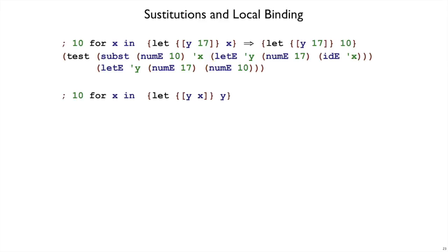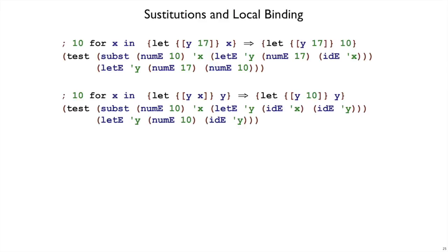Let's try another example. Let's suppose we're replacing all the x's with 10 in this let form. So now we have y be x and y. Again it seems clear that this x should be replaced by 10 so that we have let y be 10 and y. There's a test case for that one. The ide x here on the right hand side of the let got replaced with the num e 10.